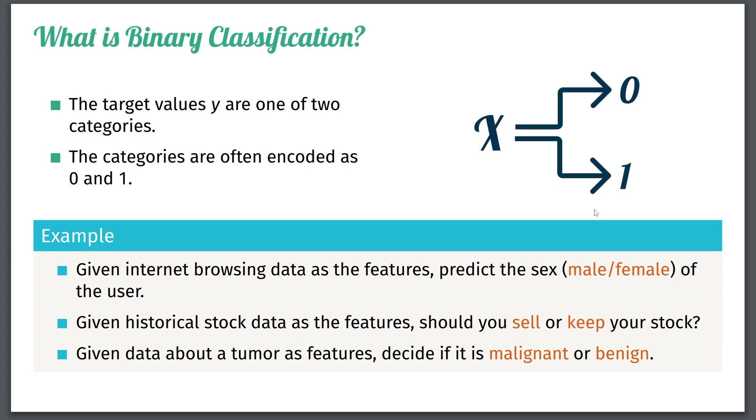Notice in the last example, the similarities between the regression problem for a tumor that Steen told you about, essentially predicting disease probabilities, which is a continuous number. But here we have more of a categorical question or a binary classification question, which is just decide if it's malignant or benign. So this is what binary classification is.